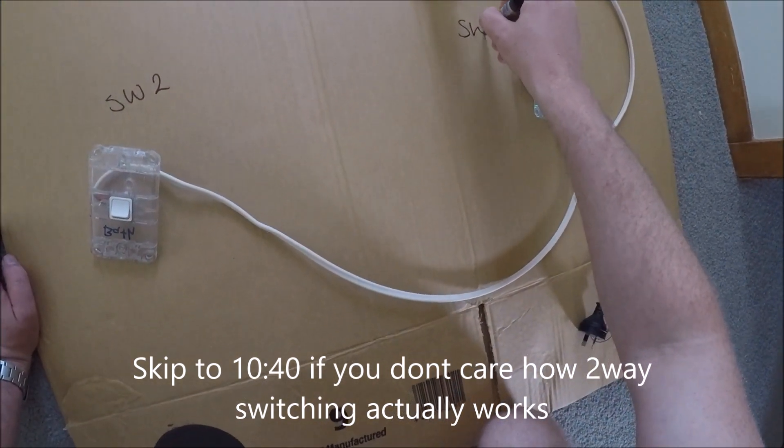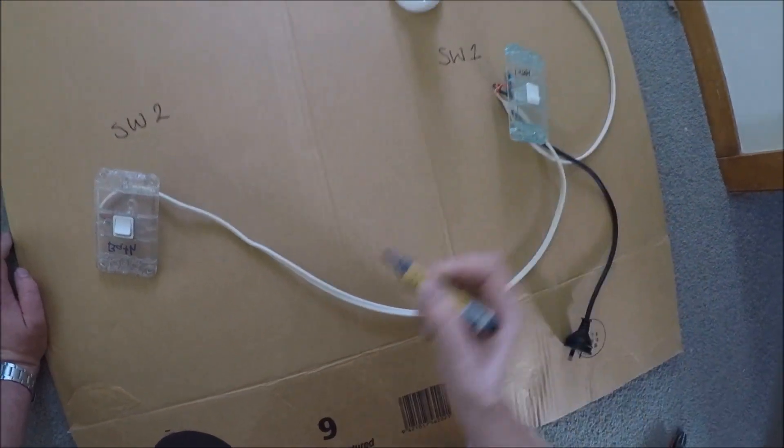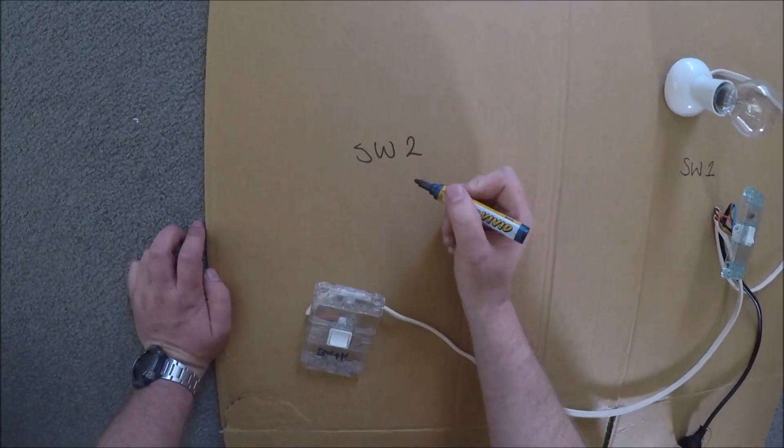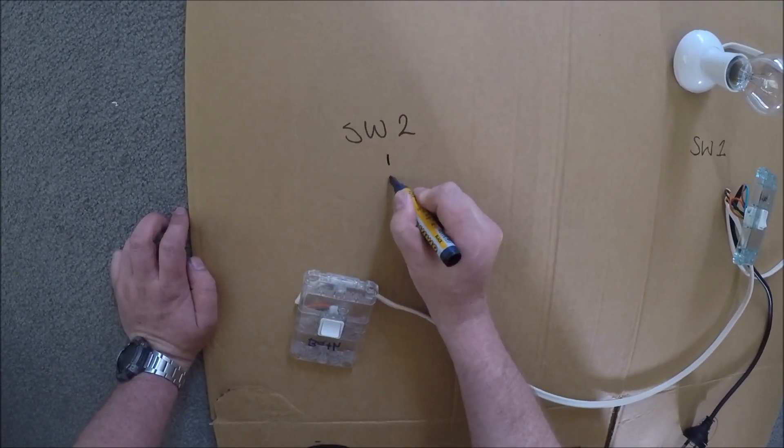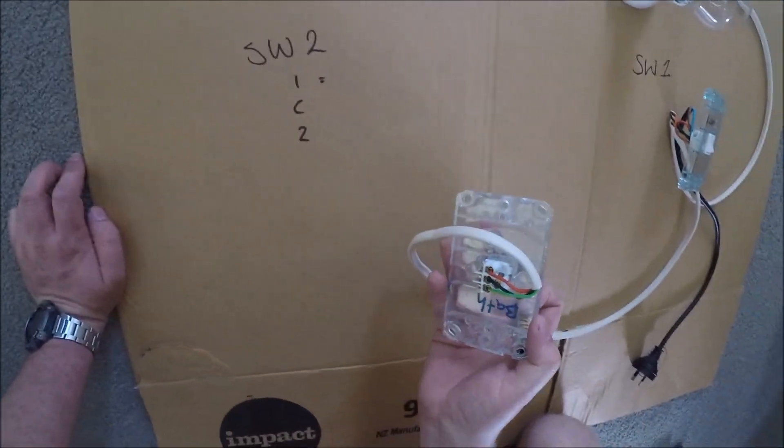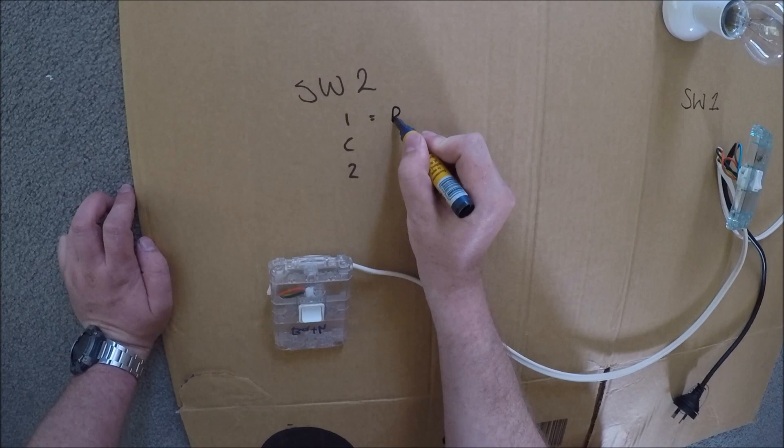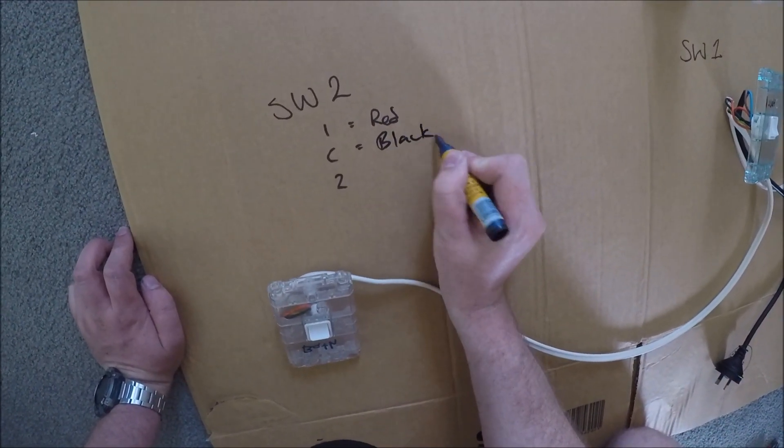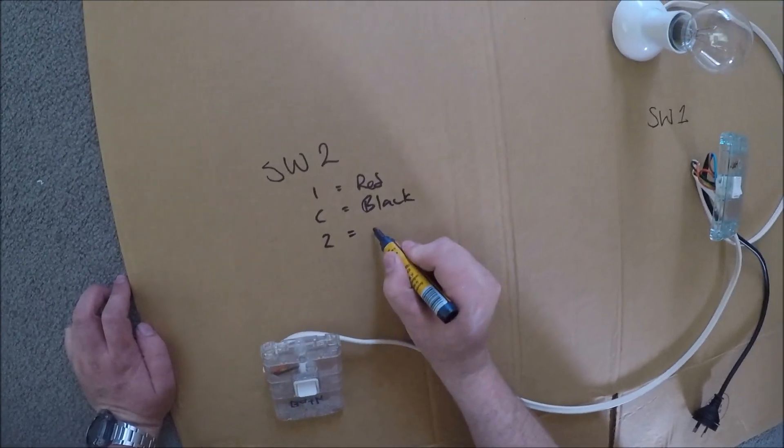Switch number two has one, common, and two. In one we put red, common is black, and in two we put green.